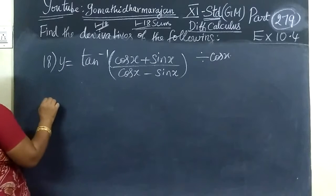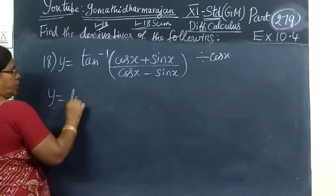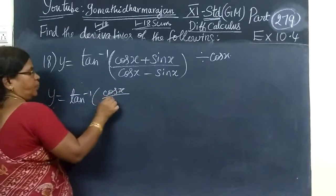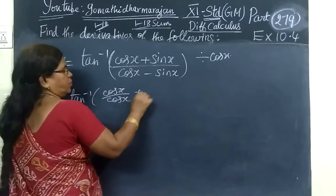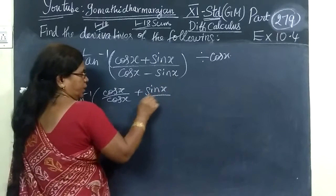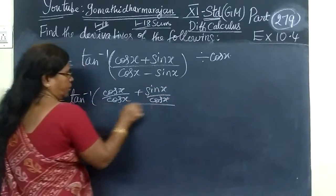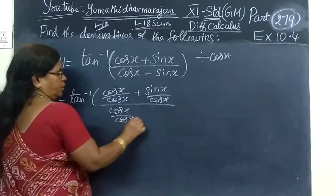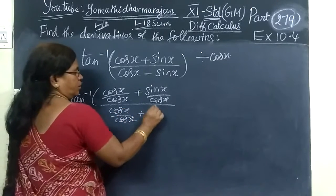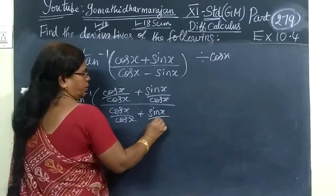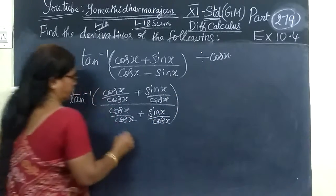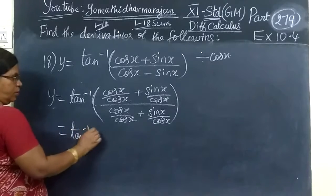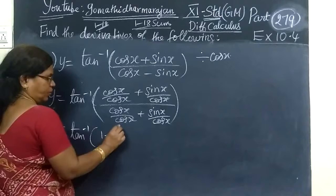Let y equal to tan inverse. You divide each term by cosine. So your sine x by cosine, in the plus, cosine x by cosine, plus sine x by cosine. In the plus, tan inverse, 1 plus sine x by cosine.